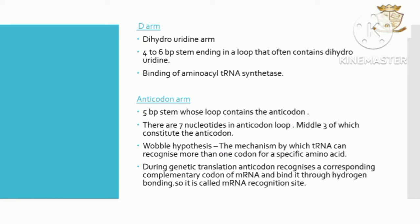The anticodon arm has a stem that is five base pairs long, and the loop contains the anticodon. There are seven nucleotides in the anticodon loop, the middle three of which constitute the anticodon. The Wobble hypothesis describes the mechanism by which tRNA can recognize more than one codon for a specific amino acid. The base pairing of the codon and anticodon is based on the Wobble hypothesis.